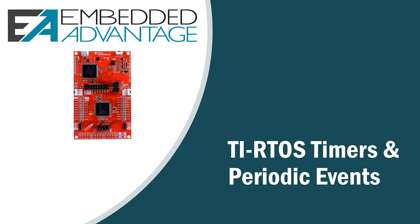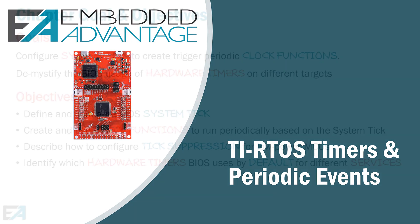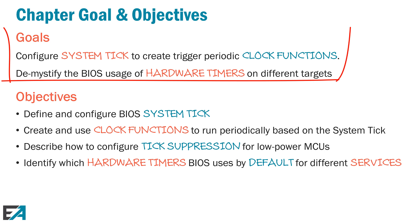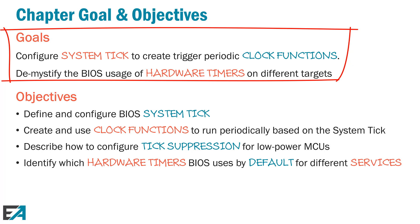Welcome to chapter 10: TI RTOS timers and periodic events. Throughout the workshop, we've been talking a lot about the system tick and we've also alluded to clock functions. Two goals of this chapter are really how do you configure the system tick, and how do you use that system tick to trigger clock functions? BIOS uses timers to do a lot of these activities, so based upon your architecture, what timers are being used by default? Can you switch timers? Can you combine timers?